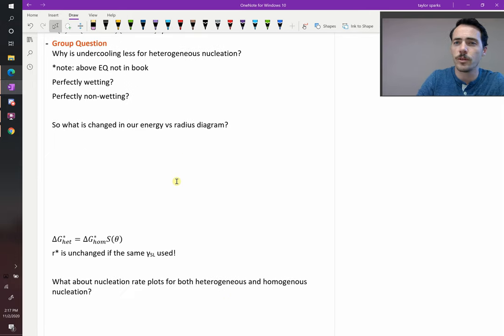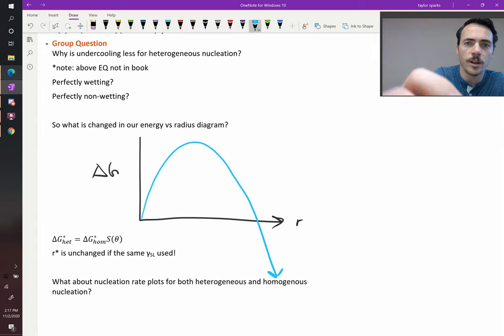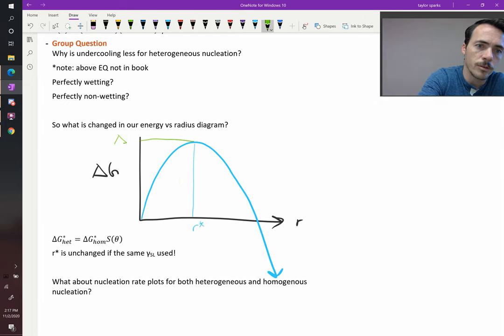Again, this is the nucleus size, R, and this is our change in the Gibbs free energy of our system. Here's what we have happening. With regular homogeneous nucleation, we had this happening. And there existed an R star value, and there existed a delta G star value, an activation energy for homogeneous nucleation.